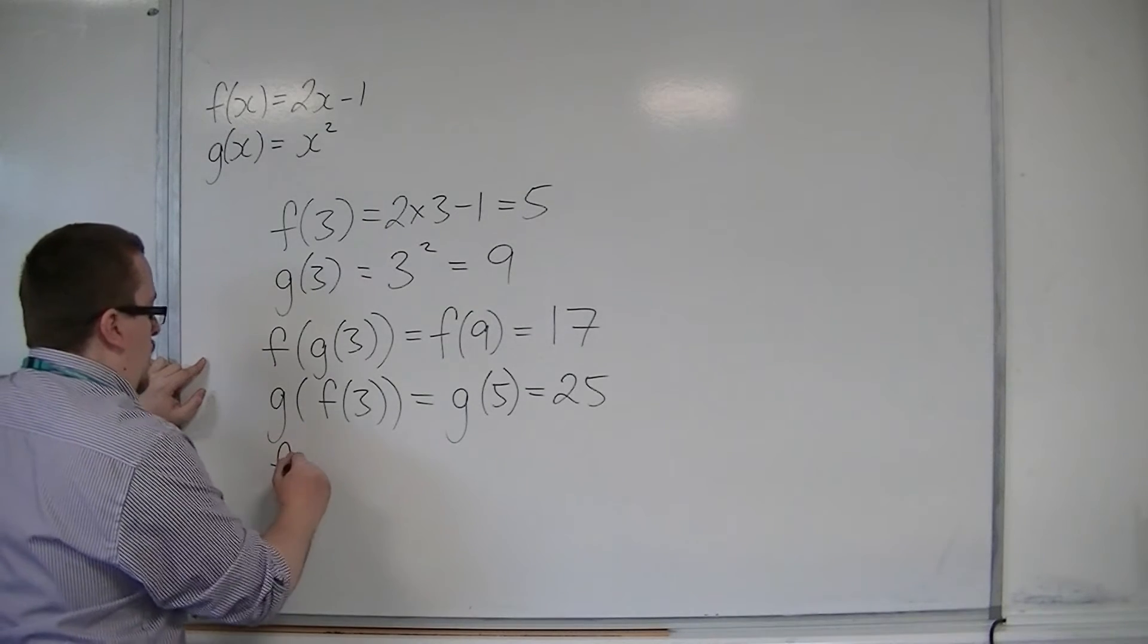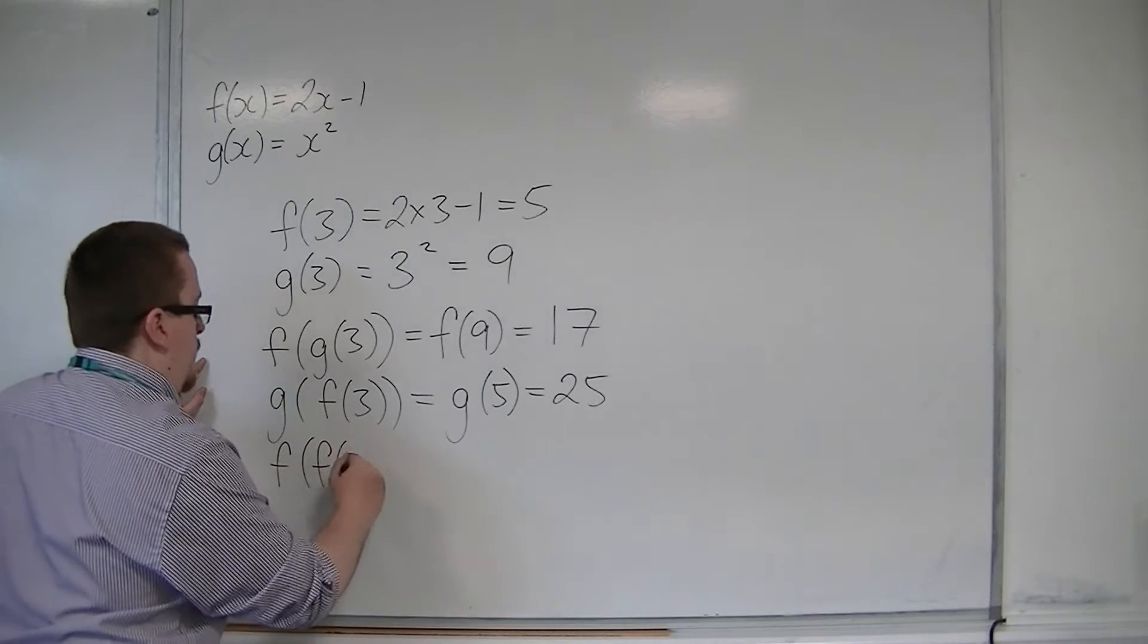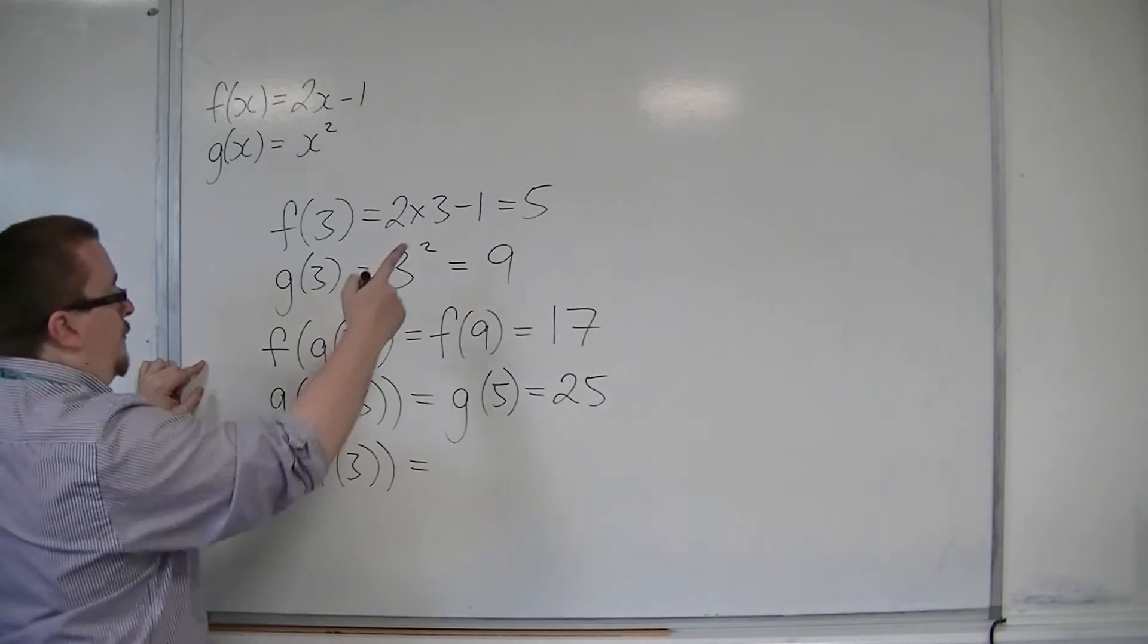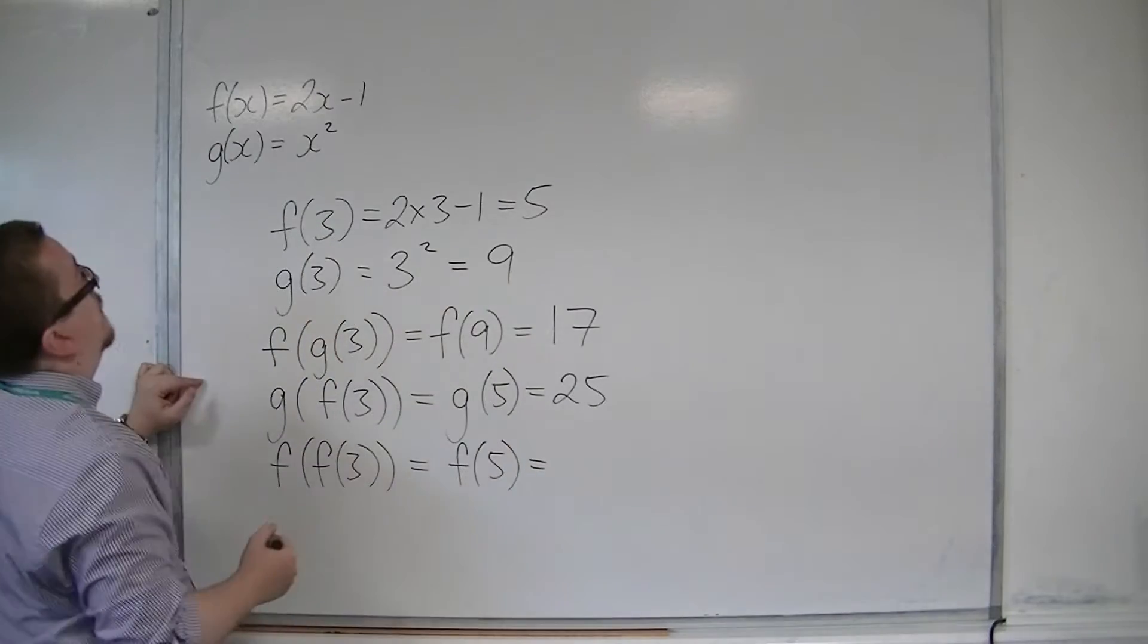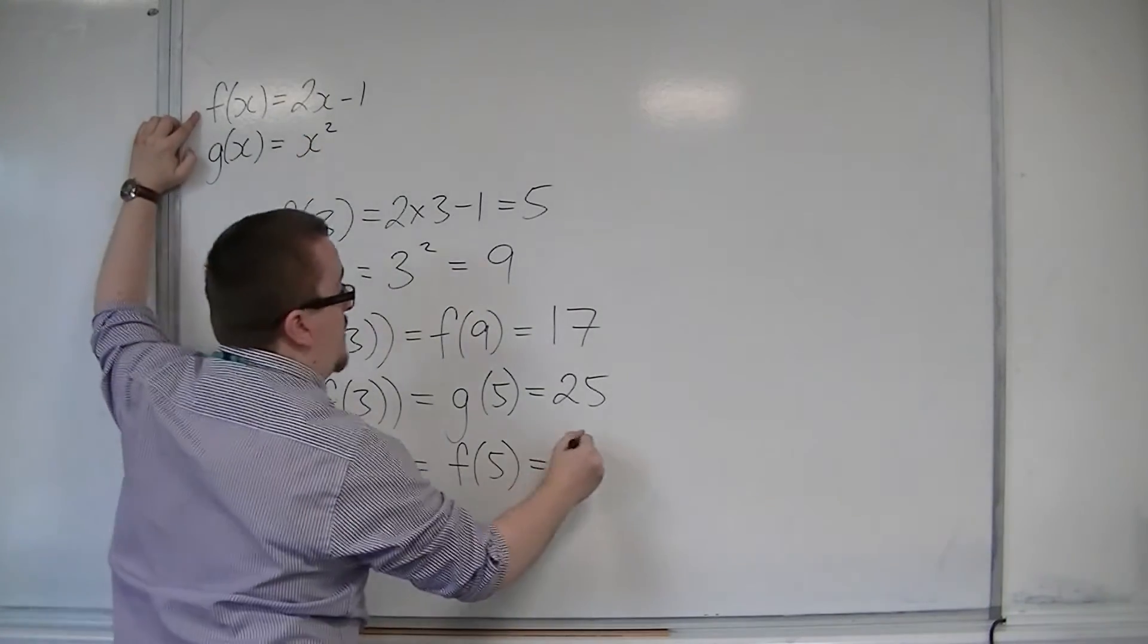I could also work out what f of f of 3 is, so that's the same as f of 5. So f of 5, 2 fives are 10, take away 1 is 9.